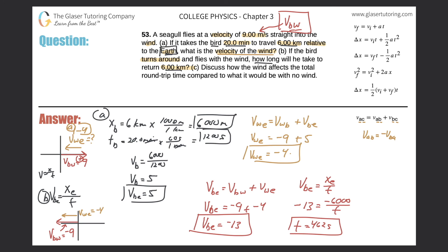The original time was 1200 seconds, or 20 minutes. Converting 462 seconds to minutes: 462 divided by 60 equals 7.7 minutes. So it takes 7.7 minutes going with the wind, compared to 20 minutes going against it. The answers make sense — it's shorter going with the wind than into the wind, and the numbers confirm that. Thanks for watching; please remember to subscribe and I'll see you in the next problem.